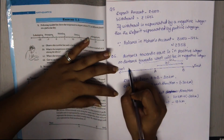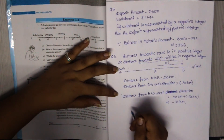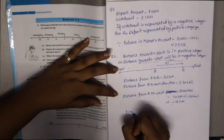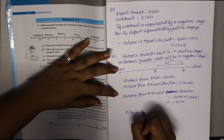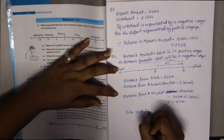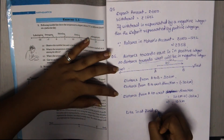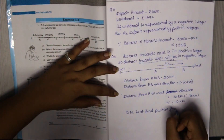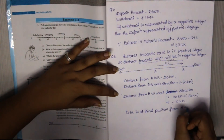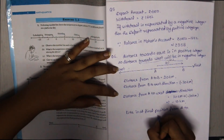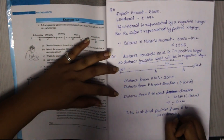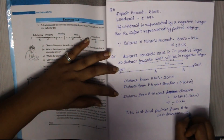Therefore Rita's final position from A is in the west direction, that is minus 10 kilometres. The negative sign represents the west direction.